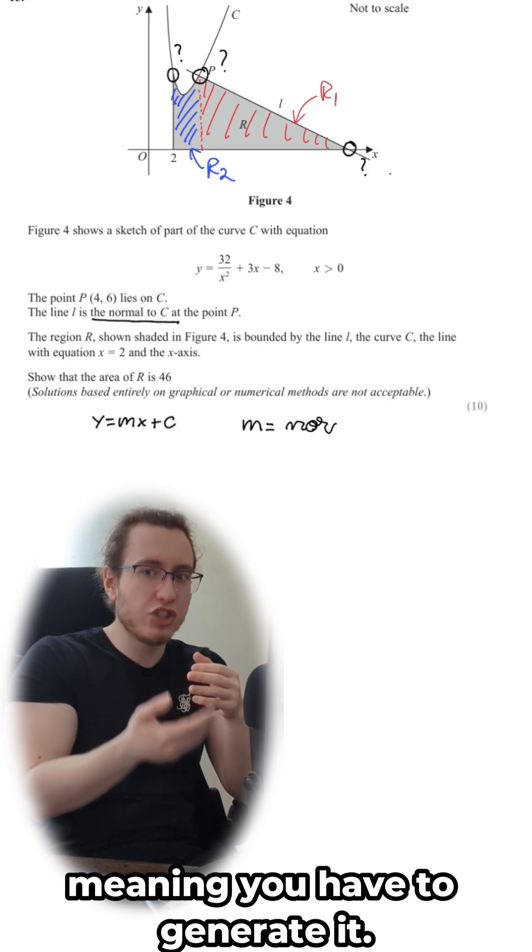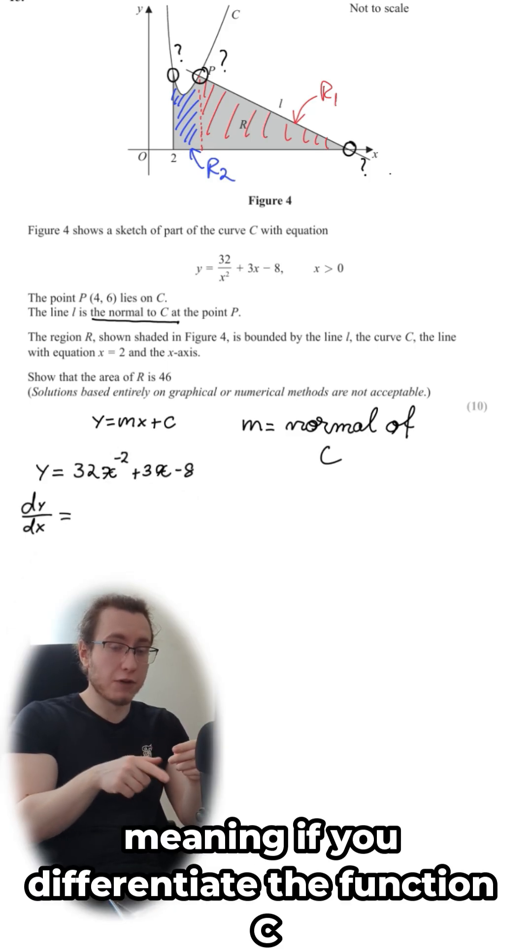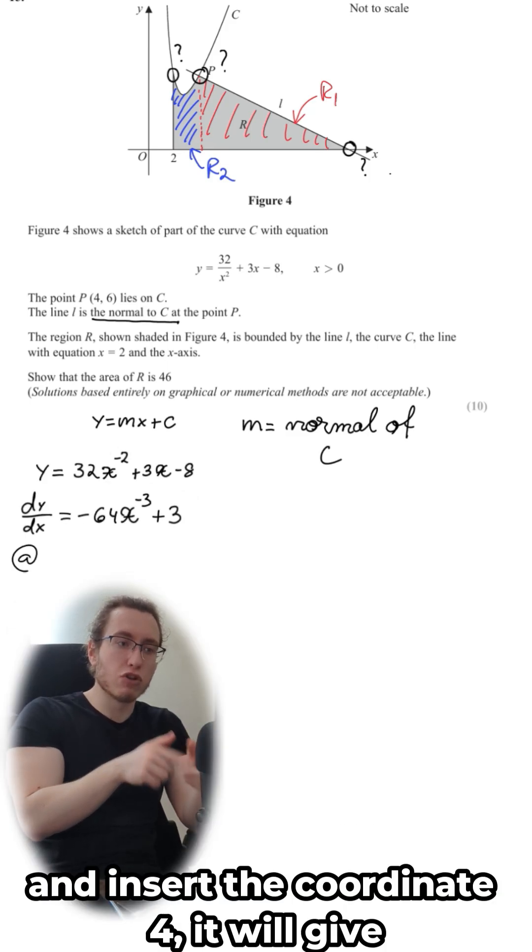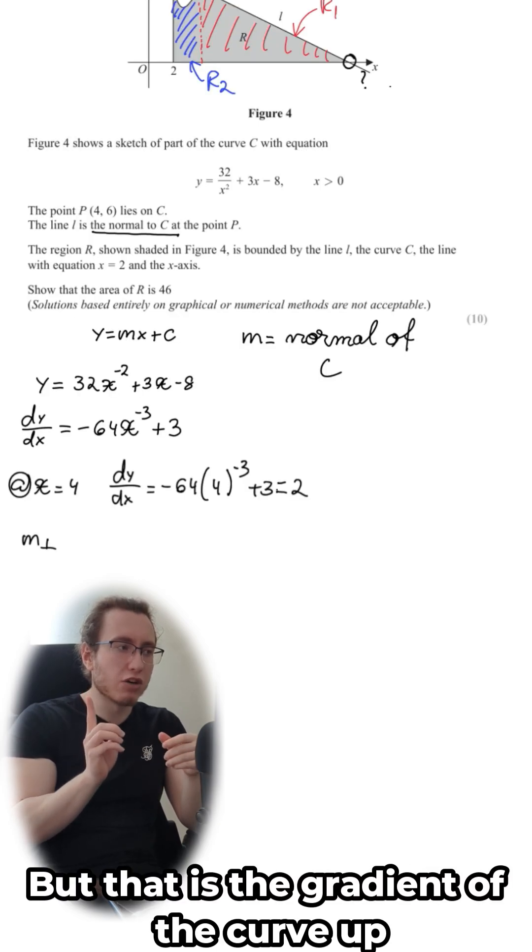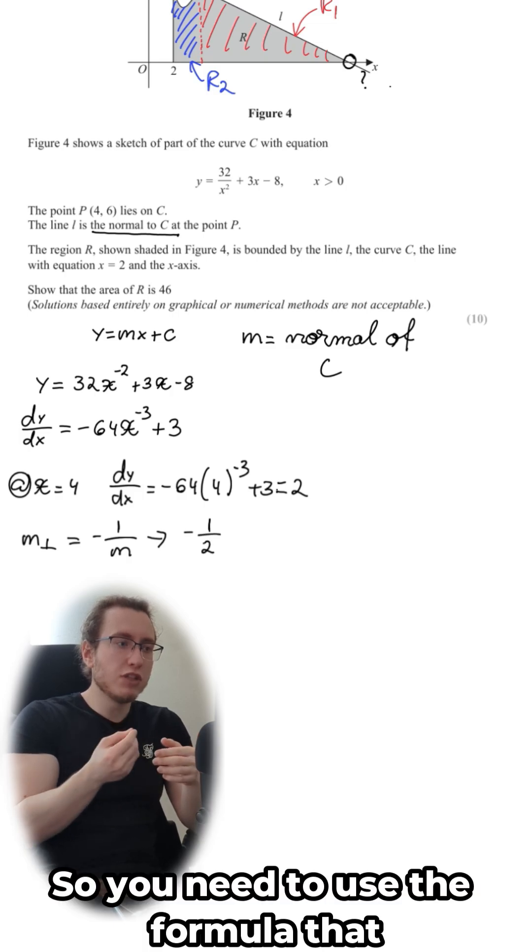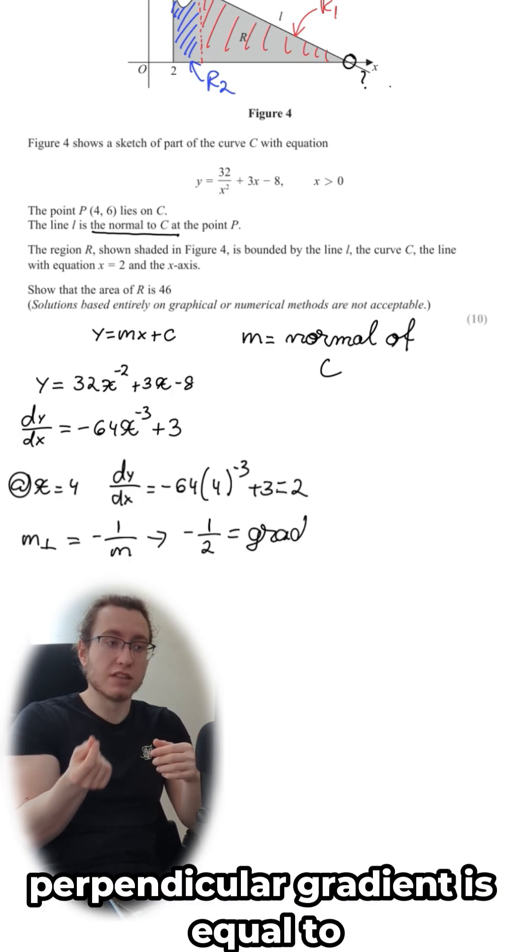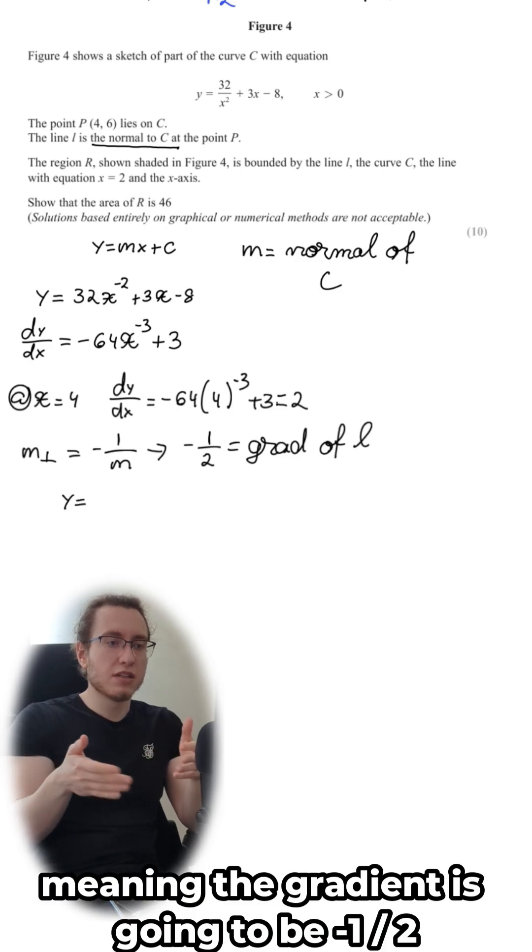You get told that the line is normal to C, meaning if you differentiate the function C and insert the coordinate 4, it will give you the gradient of the curve. But that is the gradient of the curve, and the line is normal to it, so you need to use the formula that perpendicular gradient is equal to minus 1 over gradient of your curve. Meaning the gradient is going to be minus 1 over 2 in this case for the line.